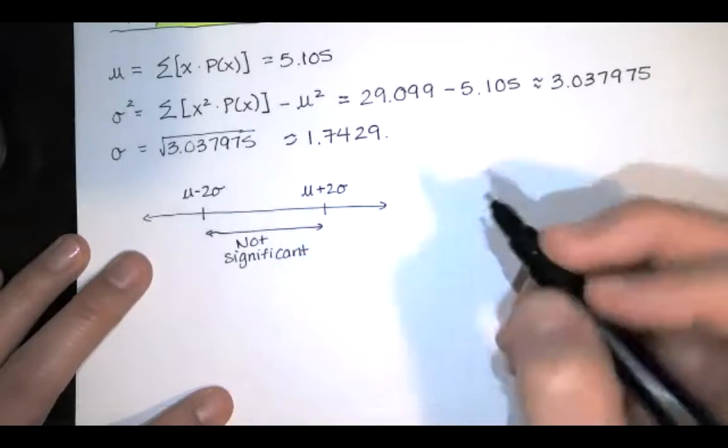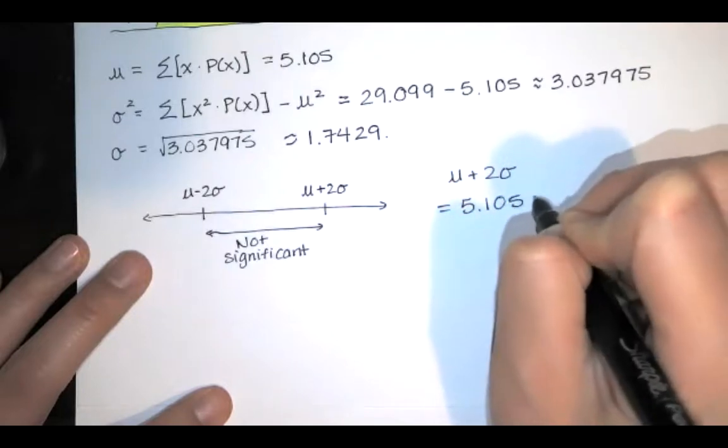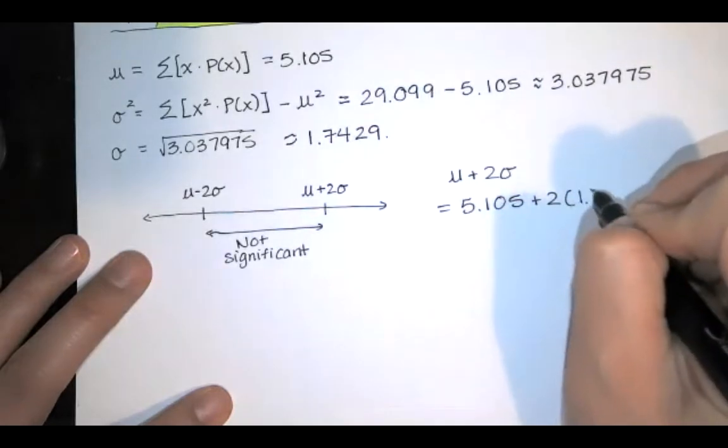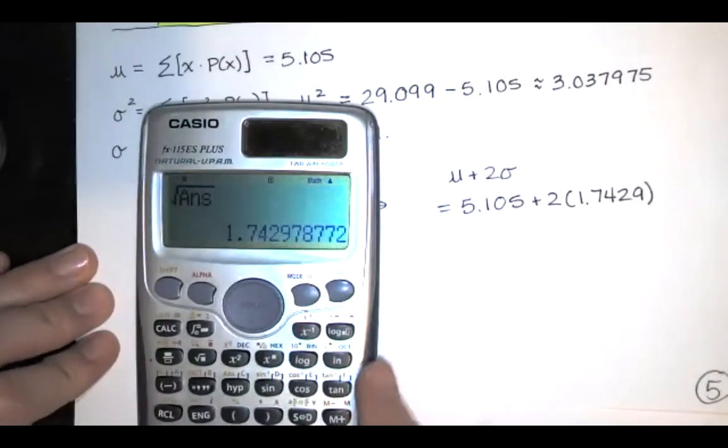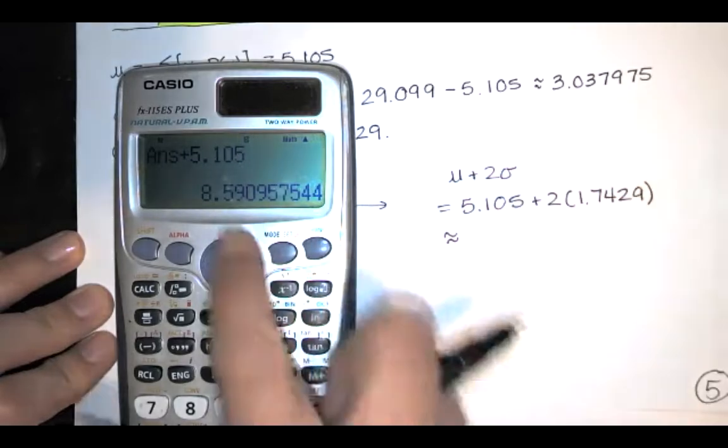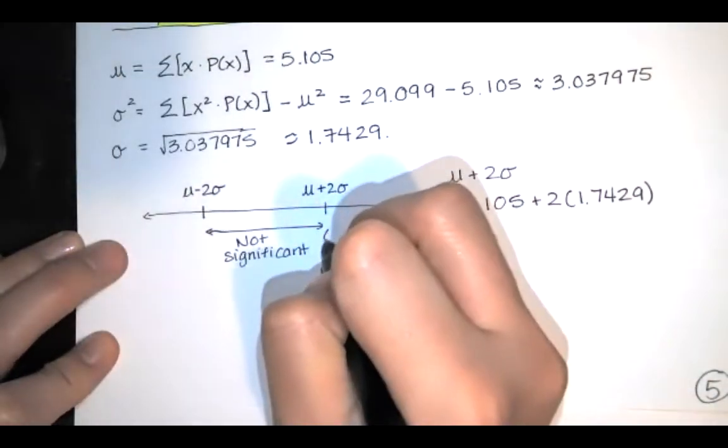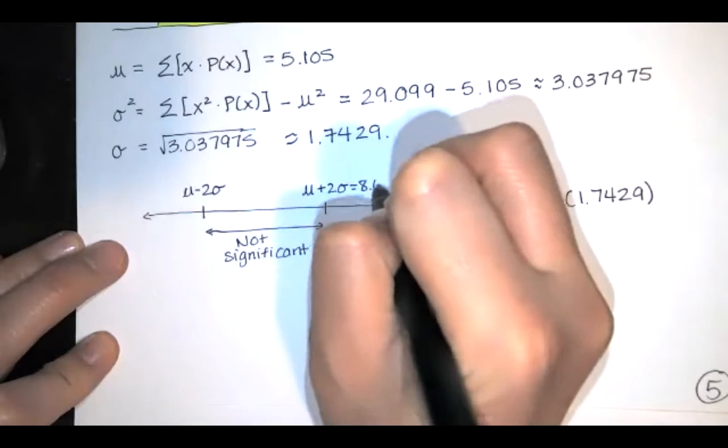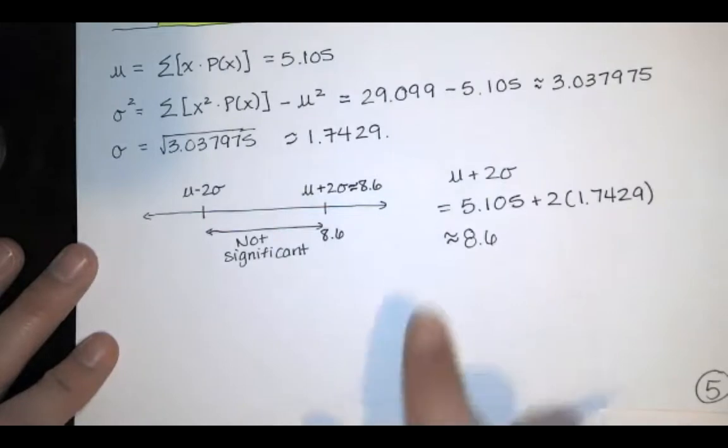First, they want the maximum value. So we want the mean plus two standard deviations, which is 5.105 plus two times this number here. That's an approximation. I actually have the actual standard deviation, the exact answer in my calculator. So I'll just double that and I'll add that 5.105. And then I'll round to one decimal place because I know that that's what they want. So this is 8.6. That's approximately 8.6 girls. That would be normal out of those 10 births or the highest non-significant value.